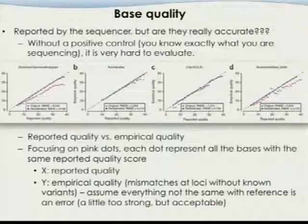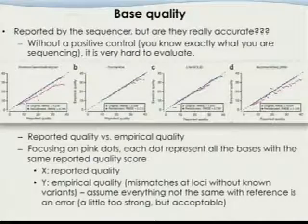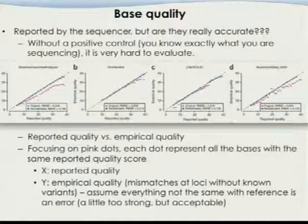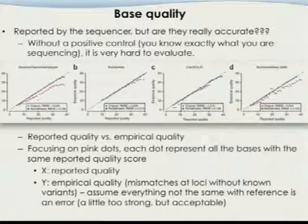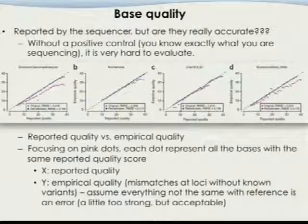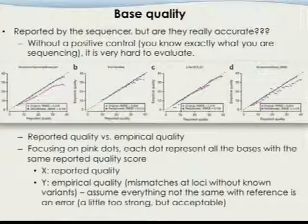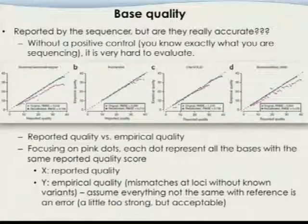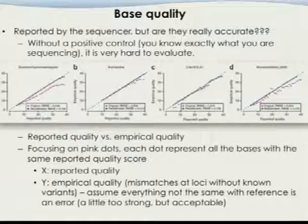The empirical quality is calculated as the mismatch rate at loci without known variants. If there's a mismatch in a region not in dbSNP, it's considered a sequencing error — a somewhat stringent assumption, but acceptable. This really tells us that sometimes we cannot believe what the sequencer reports and we need to do recalibration. The blue lines here are the recalibrated ones, and you can see after the algorithm they come back toward the diagonal.